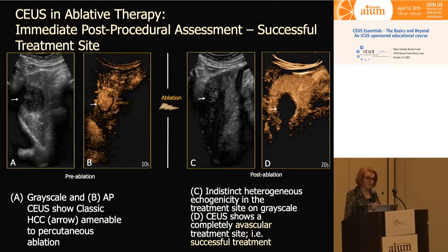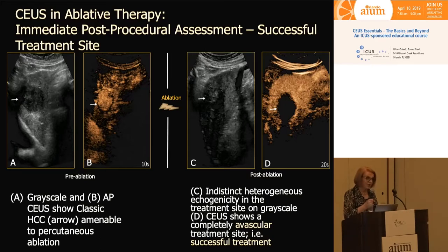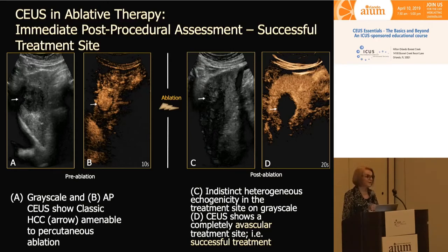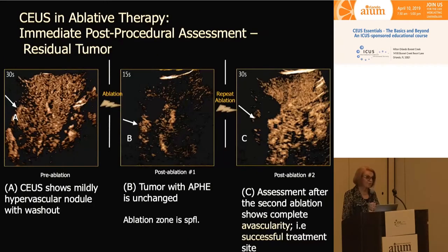When we consider contrast-enhanced ultrasound in ablative therapy, it's a very valuable technique. On the left side, we're looking at a grayscale and CEUS image of a liver tumor — it's hyper-enhancing. Then the ablation is performed, and on the immediate post-procedural follow-up scan we can see that the nodule is now completely avascular, suggesting successful treatment. This is very commonly done in my own department.